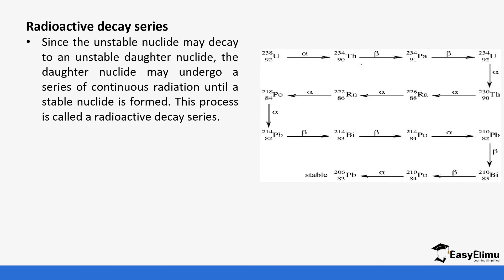The radioactive decay series works as follows: an unstable nuclide may decay to a daughter nuclide, and that daughter nuclide may undergo further radiation until a stable nuclide is formed. This continuous process is what is referred to as the radioactive decay series.